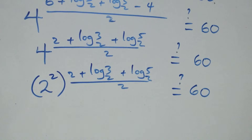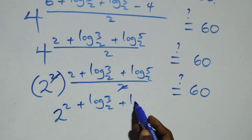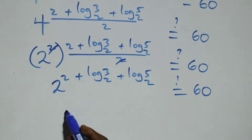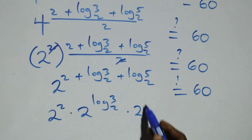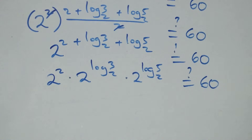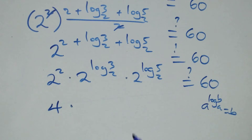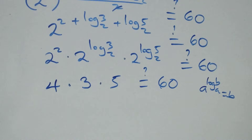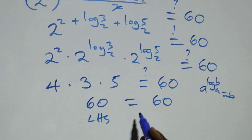The 2 in the exponent and the denominator cancel each other, giving 2 raised to power 2 times 2 raised to power log 3 base 2 times 2 raised to power log 5 base 2. Applying the law of indices and using a raised to power log b base a equals b, 2 squared is 4, 2 raised to log 3 base 2 is 3, and 2 raised to log 5 base 2 is 5. So we get 4 times 3 times 5, which is 4 times 15 equals 60. The left-hand side equals the right-hand side.